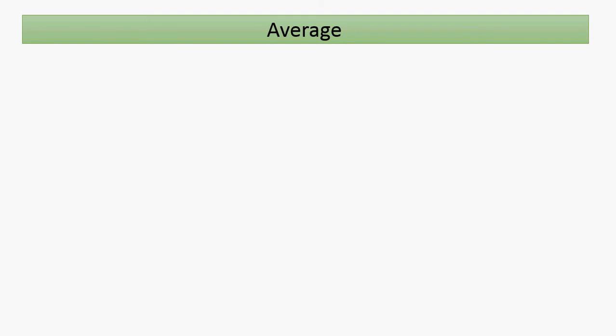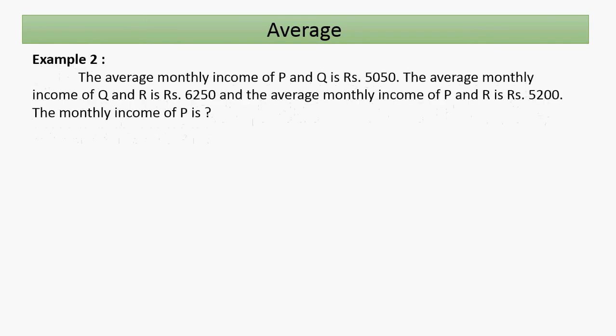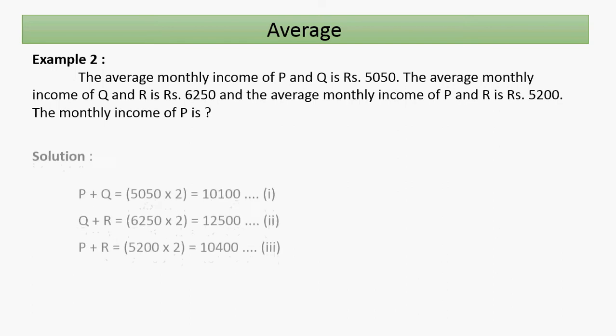Next example: the average monthly income of P and Q is rupees 5050, the average monthly income of Q and R is rupees 6250, and the average monthly income of P and R is rupees 5200. Find the monthly income of P.